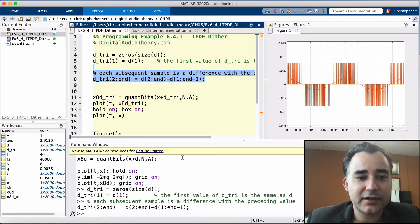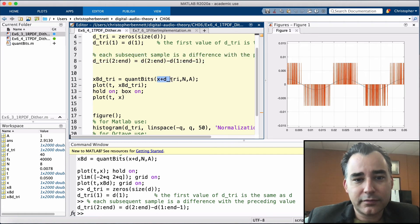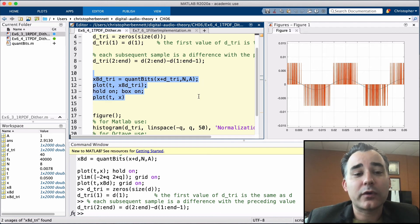So now we've generated our TPDF dither. Next, we're going to add this triangular dither to the signal. So here's our signal plus the triangular dither. And we're going to quantize it. We're going to save it in a variable called x8, so 8-bit quantized, with dither that's triangular. And we're going to plot this.